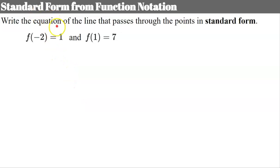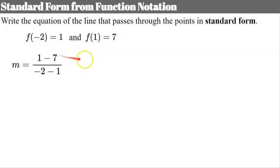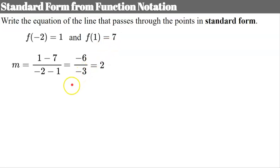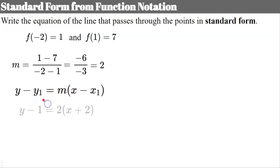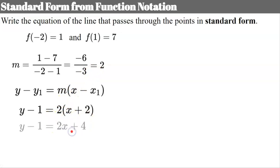Now we'll use function notation to go to standard form. These represent two points: the ordered pair negative 2, 1 and the ordered pair 1, 7. Finding the slope: 1 minus 7 is negative 6 for the change in y; negative 2 minus 1 is negative 3 for the change in x. Negative 6 over negative 3 simplifies to 2. Neither point is the y-intercept, so I'll use point-slope form, substituting y-coordinate 1, x-coordinate negative 2, and slope 2. Distributing the 2 gives 2x and 4.